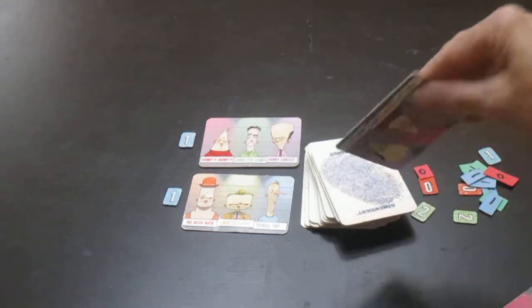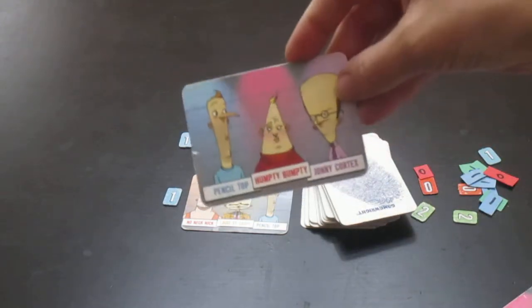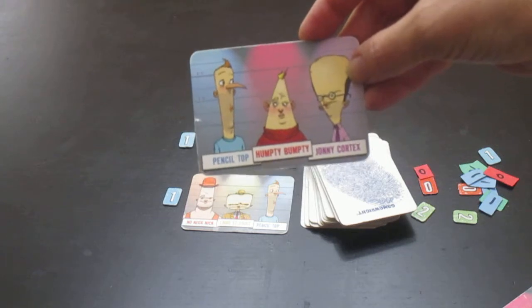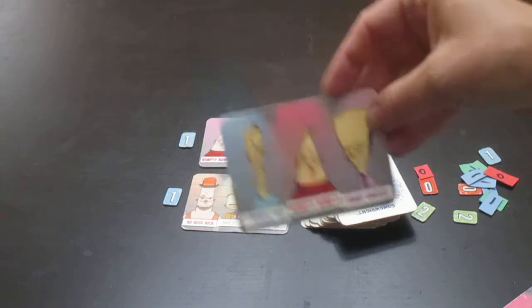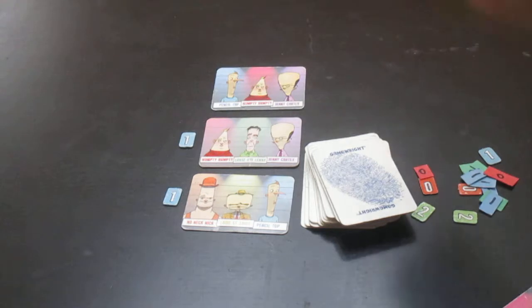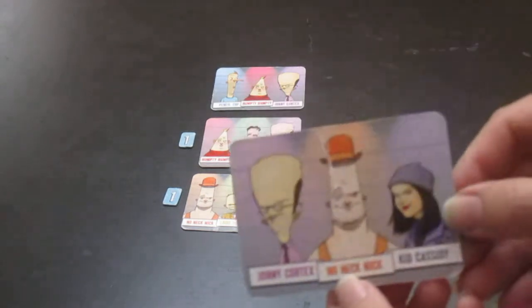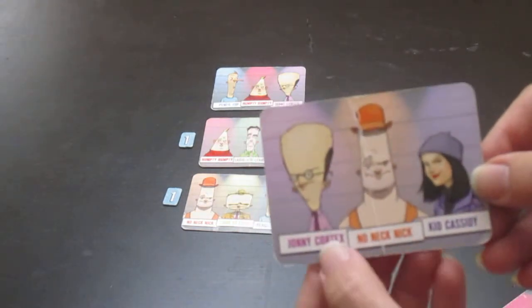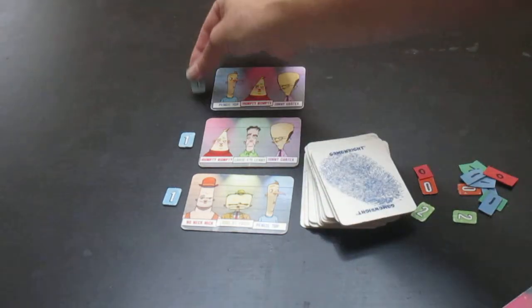The next person draws a card and they draw Pencil Top, Humpty Bumpty, and Johnny Cortex. The eyewitness looks at their card and says, hmm, the only one that matches is Johnny Cortex. So they pick a number one.